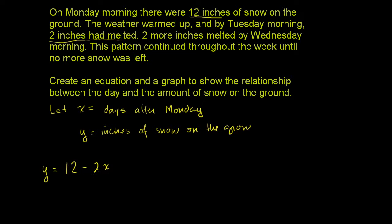So this is our equation for the relationship between the day and the amount of snow on the ground: y = 12 - 2x. x is the day, how many days after Monday, and y is the inches of snow left on the ground. We start with 12, and then every day we lose exactly 2 inches.